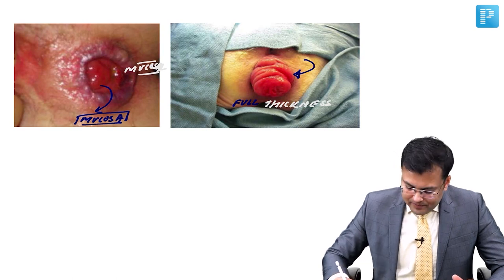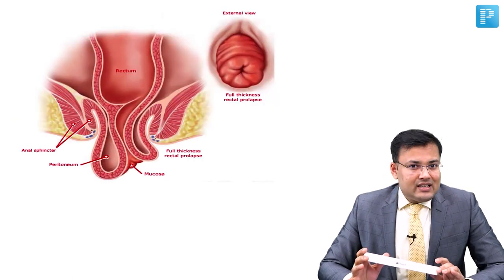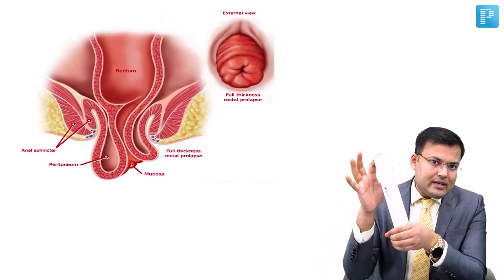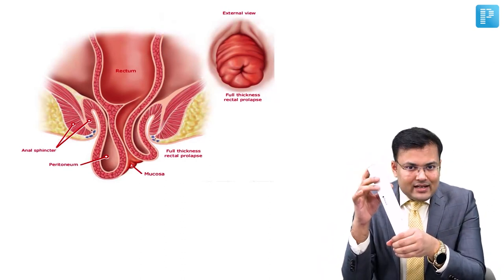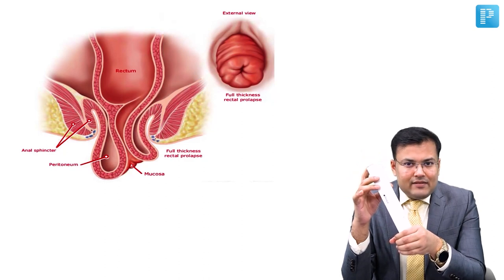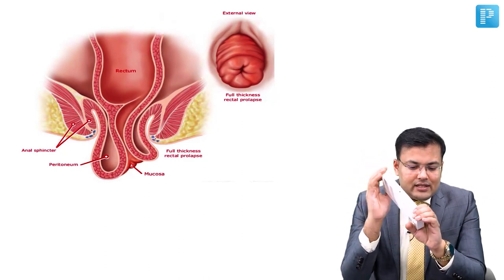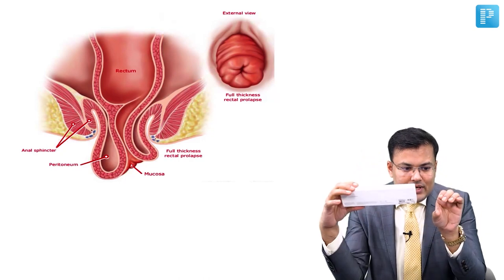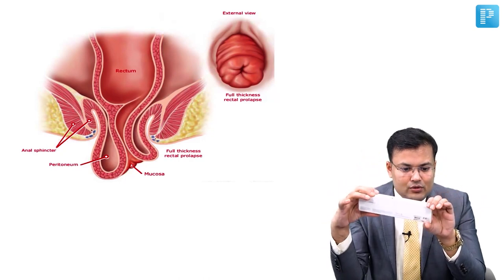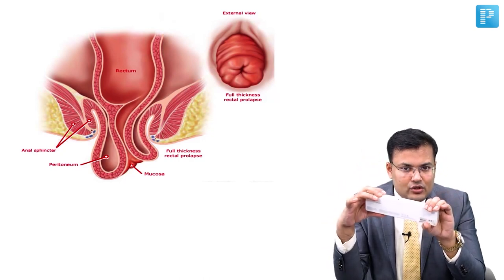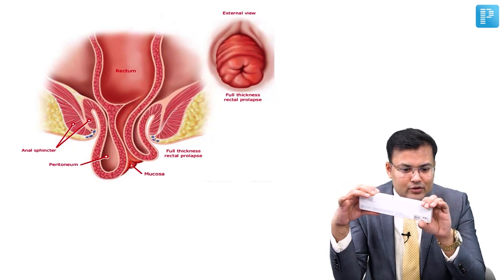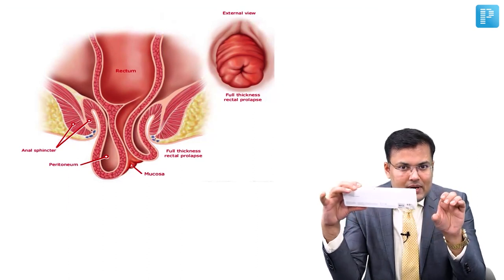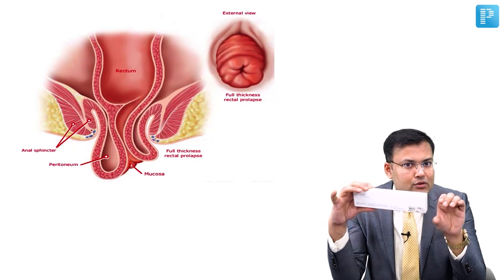Now see the anatomy. In certain patients there is redundant rectum. This is the anal canal and this is the rectum. Whenever there is redundant rectum and weakness of pelvic floor muscles, this rectum goes inside the anal canal. Before prolapse, you can see one loop going into another — one part of bowel going into another. This is intussusception.